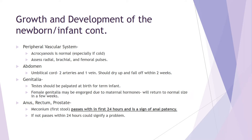For the peripheral vascular system: acrocyanosis is normal, especially if they're cold — very normal for those first couple days to have bluer hands and feet. You're going to assess radial, brachial, and femoral pulses in your newborn assessment, and they should all be equal bilaterally. You should be able to feel all of those.